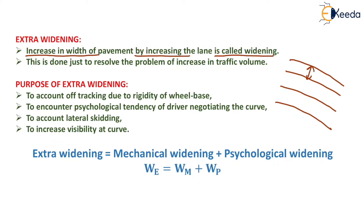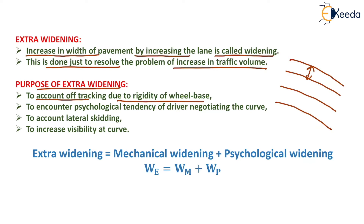Extra widening is done to resolve the problem of increase in traffic volume. The first purpose is to account for off-tracking due to rigidity of wheelbase. Due to rigidity of wheelbase, off-tracking takes place, which means the path traversed by the front axle is not the same as the path travelled by the rear axle. This phenomenon is known as off-tracking, and to avoid it we generally provide mechanical widening.